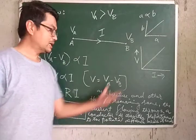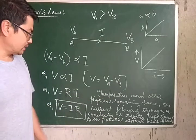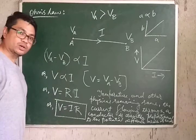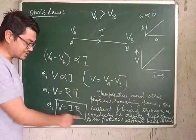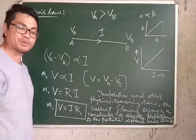To summarize Ohm's law: remember the graph — a straight line through the origin for I vs V — the statement, and the equation V = IR, where V is the potential difference between the two ends.